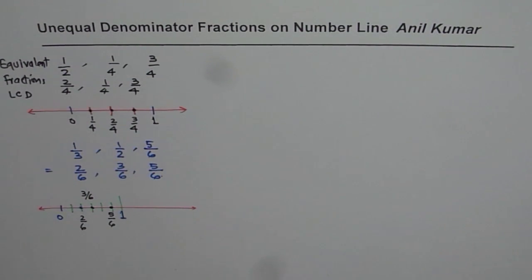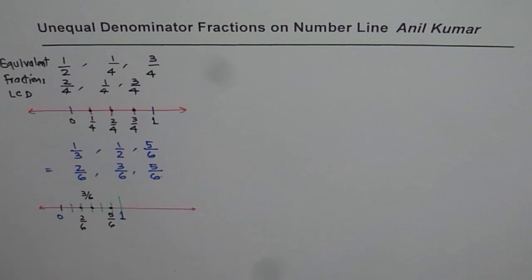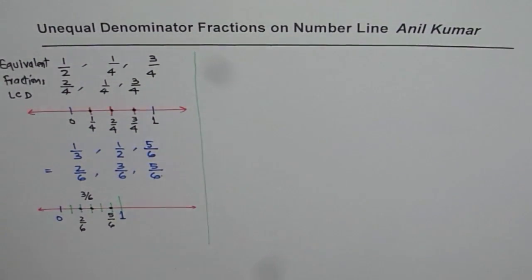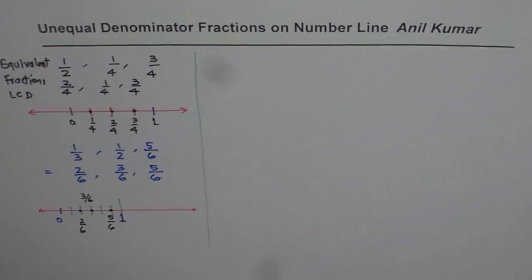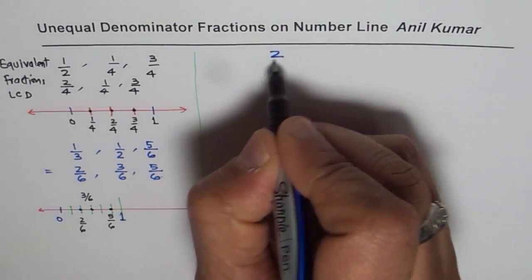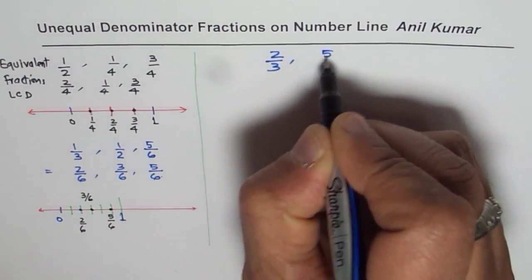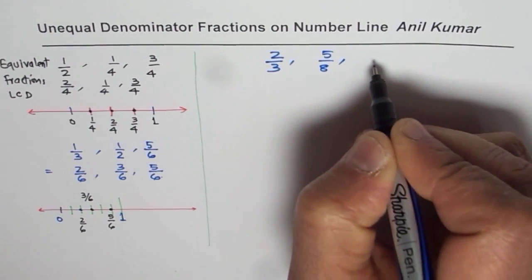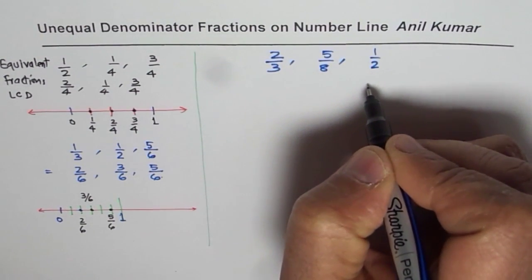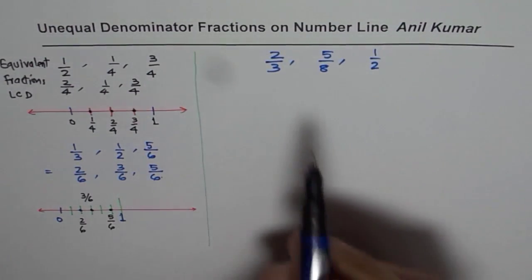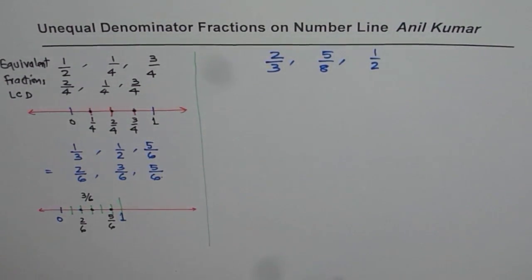Now I think you have understood how to represent fractions with unequal denominators on a number line. Let me take a more difficult question. This time we'll take the fractions 2 over 3, 5 over 8, and 1 over 2. How will you represent them on a number line? You can pause the video and try to answer this question.